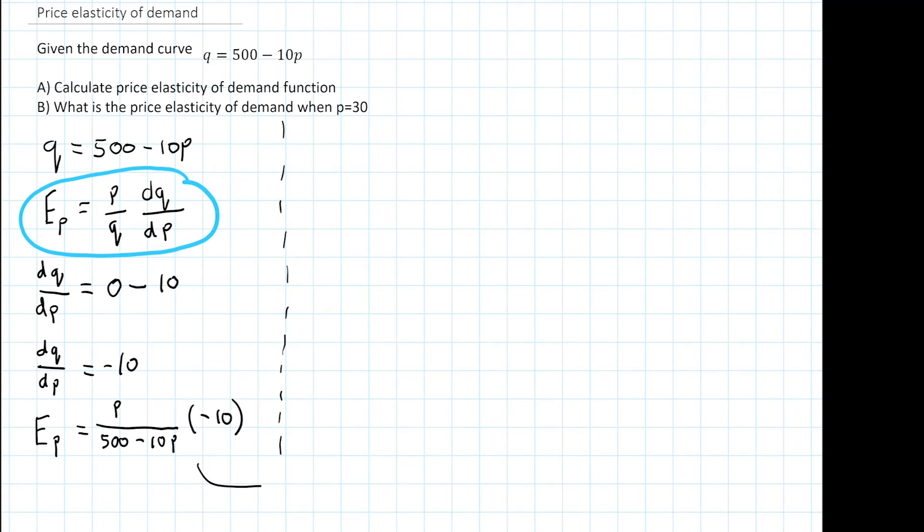So I'm just going to tidy this up a bit, move this over here and rearrange this equation. We get minus 10p over 500 minus 10p.